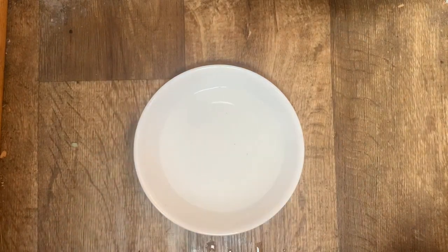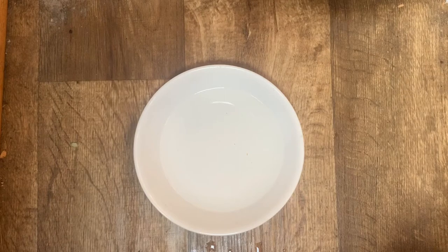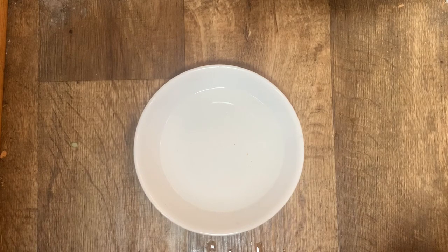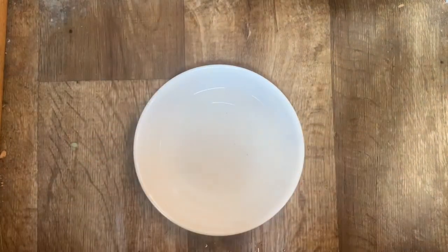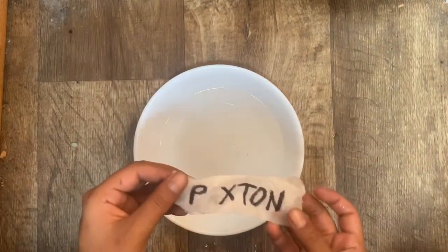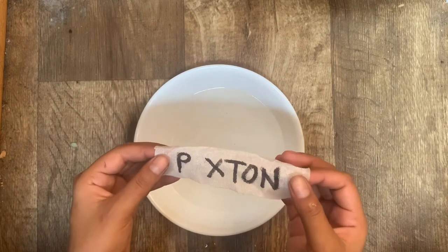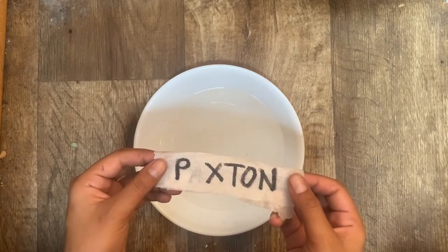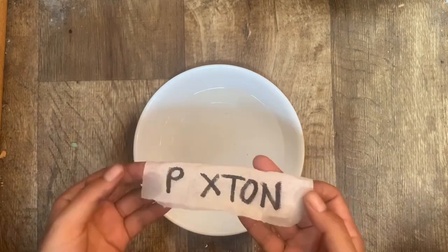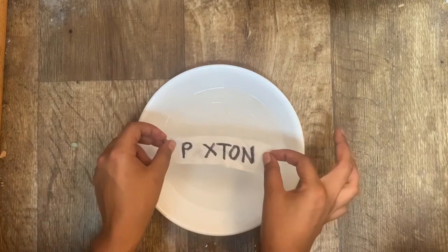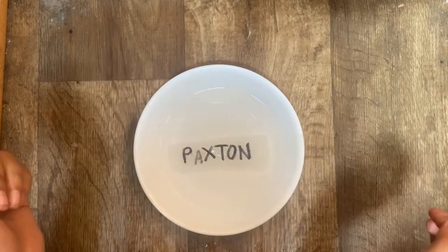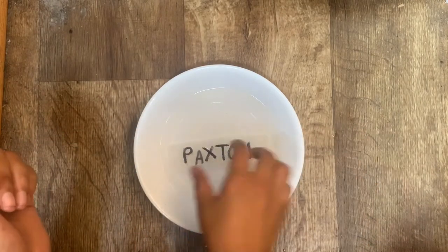The next name we're going to do is Paxton's name. And Paxton, I remember you being already really good at spelling your name, so I should have done your last name. But we are going to work on your first name today. What is the second letter in your name — the letter that comes after P? P-blank-X-T-O-N. The letter is A. Good job Paxton.